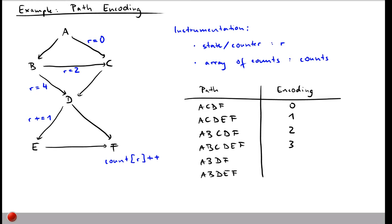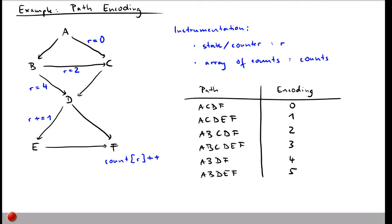For path ABDF: we take edge B to D which sets R to 4, and don't change it further, so this path is encoded as 4. The final path goes through both edges giving an encoding of 5. Every path gets one and only one unique encoding, achieved by just a few added statements that initialize or increment a value, with the final sum used as the path encoding.